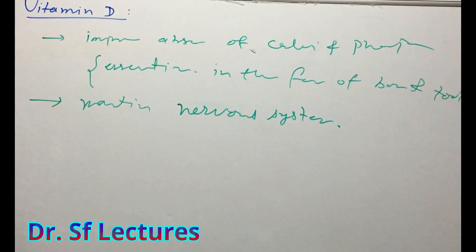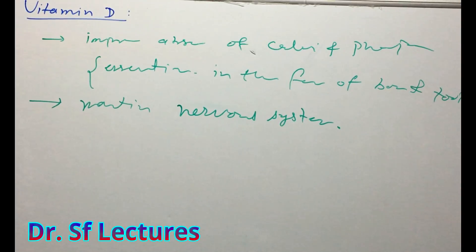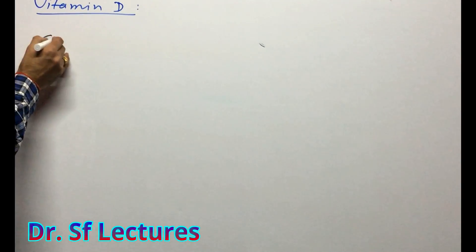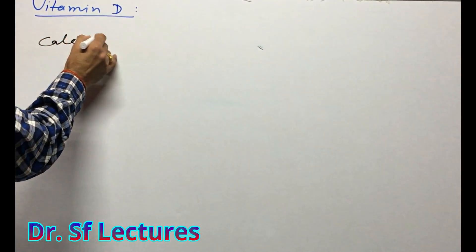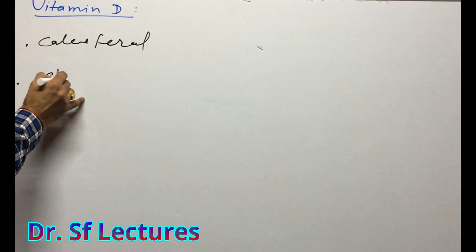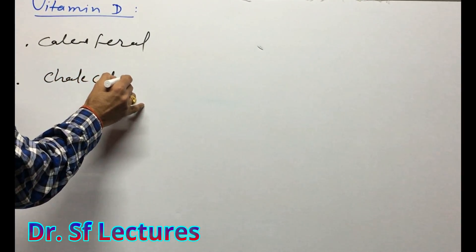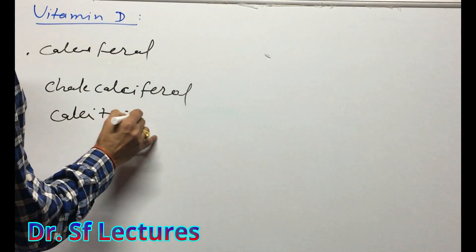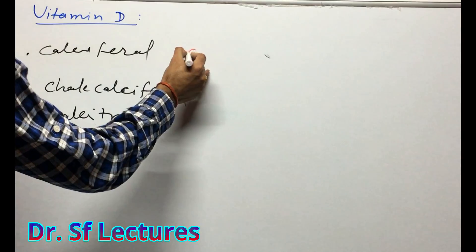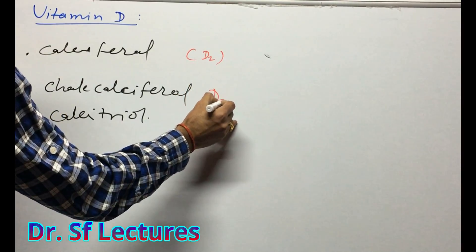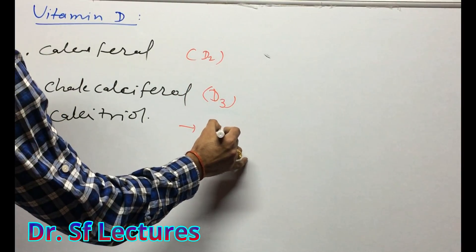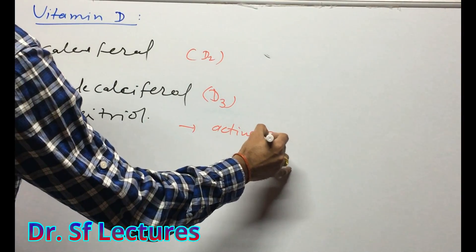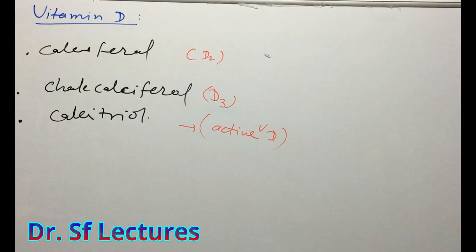I will mention all the physiological roles of Vitamin D. Some generic names of Vitamin D: the first one is calciferol, the second one is cholecalciferol, and the third one is calcitriol. Here, calciferol is D2, cholecalciferol is D3, and calcitriol is the active form of Vitamin D.